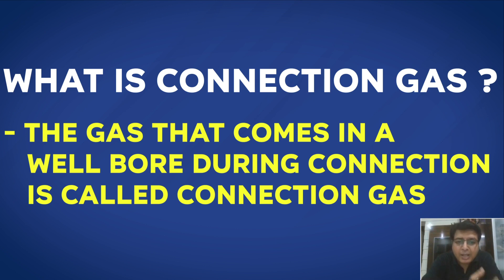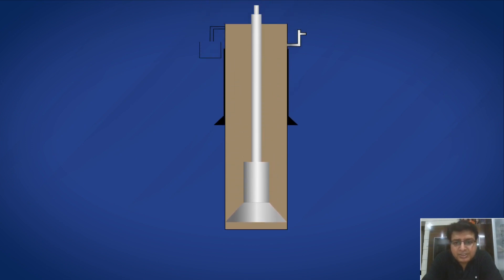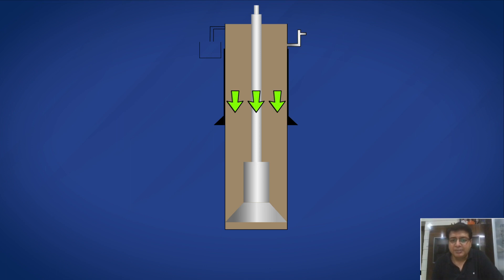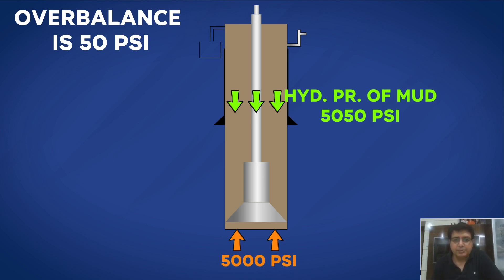What happens in the wellbore during connection can be best understood by taking an example. In this case, I have taken one example of a well drilled with very minimum overbalance. The overbalance with the hydrostatic head is only 50 psi, whereas the formation pressure is 5000 psi and the hydrostatic pressure is 5050 psi.